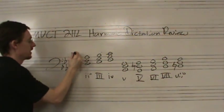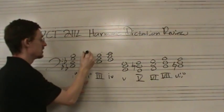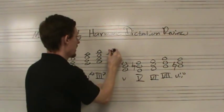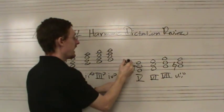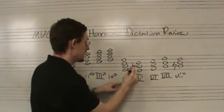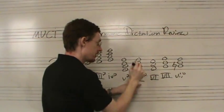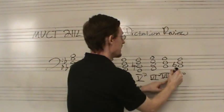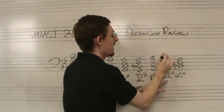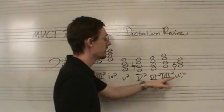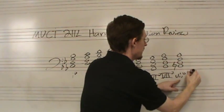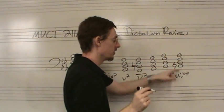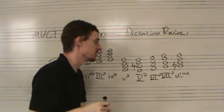Adding sevenths in minor mode: I7 is a minor-minor seventh chord. II7 is a half-diminished seventh chord. III7 is a major-major seventh chord. IV7 is a minor-minor seventh chord. V7 without the raised Ti is a minor-minor seventh chord. V7 with the raised Ti is a dominant or major-minor seventh chord. VI7 is a major-major chord. VII7 with the lowered seventh scale degree Te is also major-minor. The VII7 chord with the raised Ti — because Ti is raised and La is lowered — this is a fully diminished seventh chord.